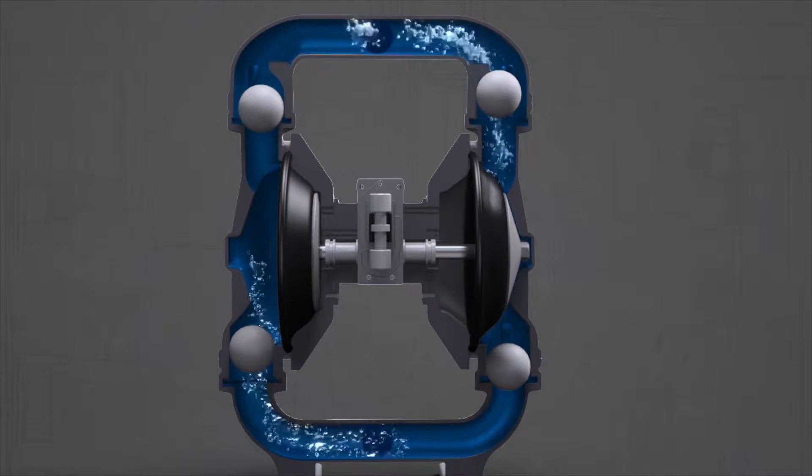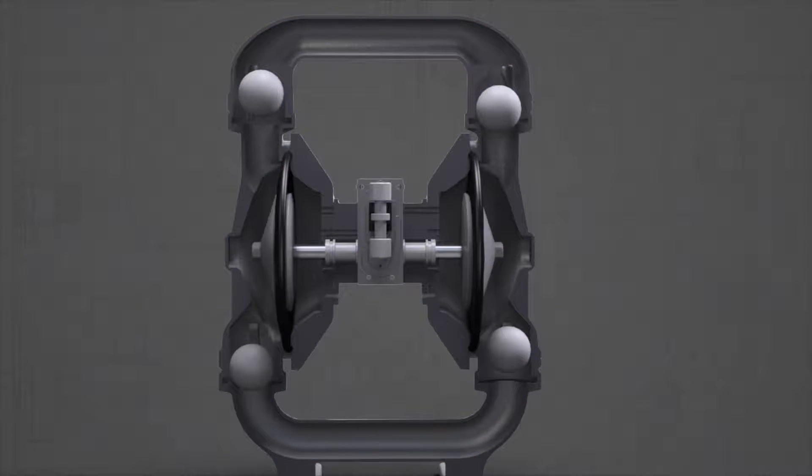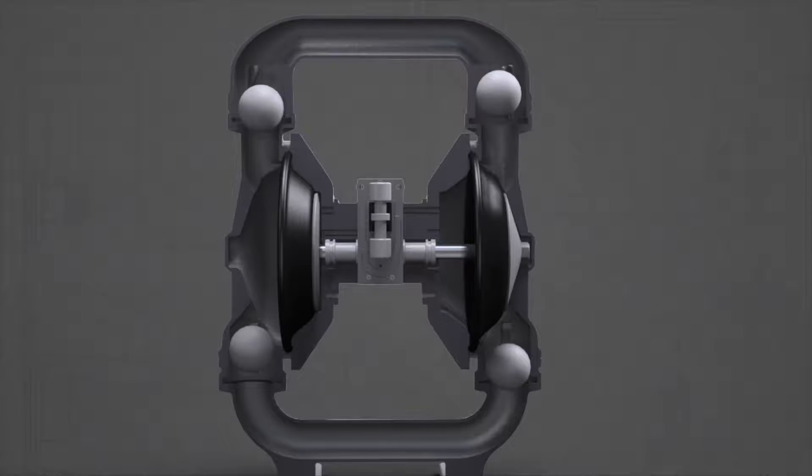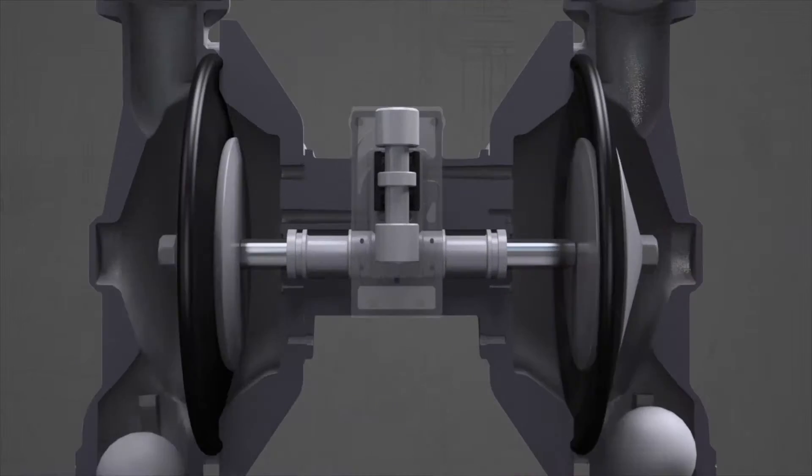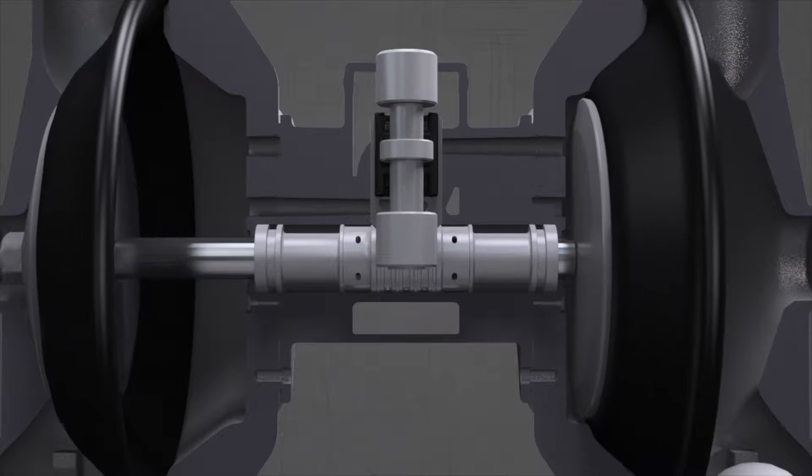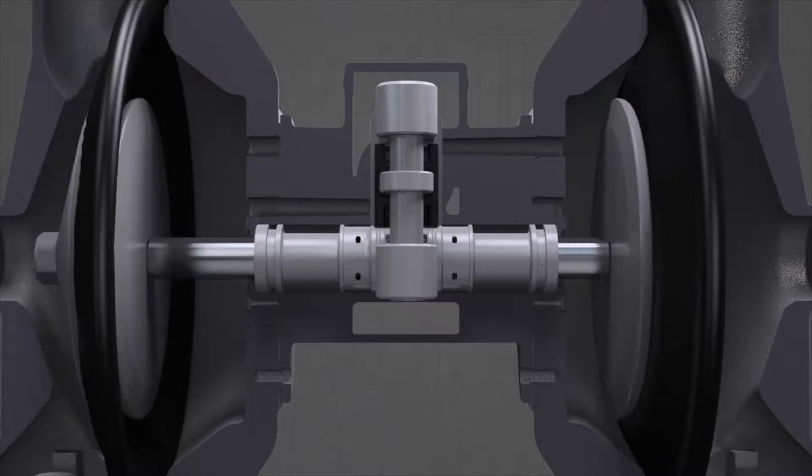The pump diaphragms are driven by pressurized air that is directed left and right by the movement of the main air valve. Here's how it works. When air pressure is applied to the pump, the main air valve moves up and down.